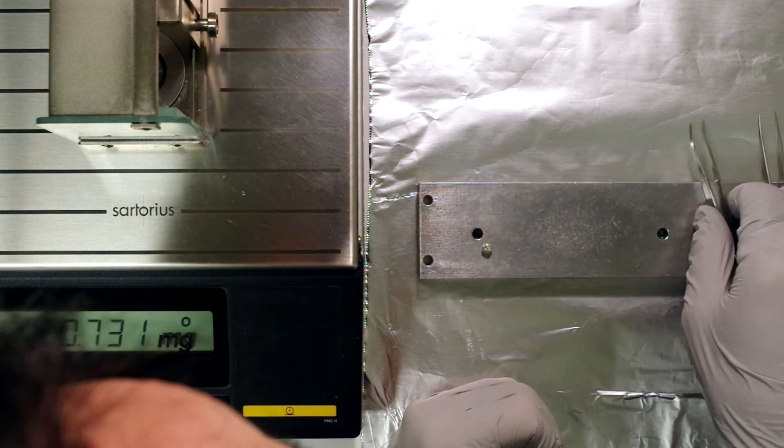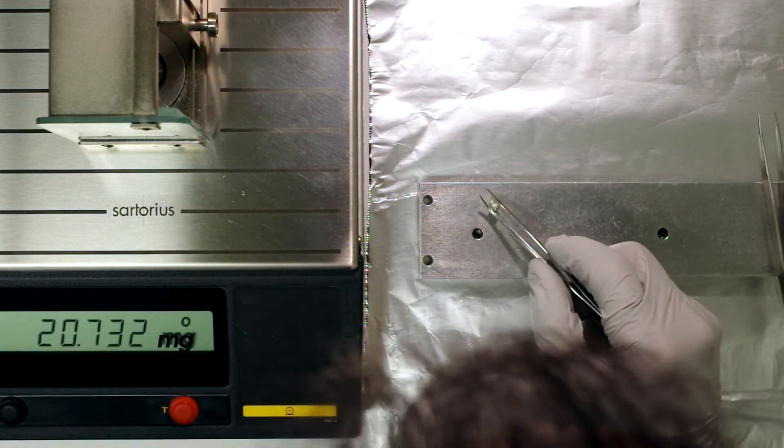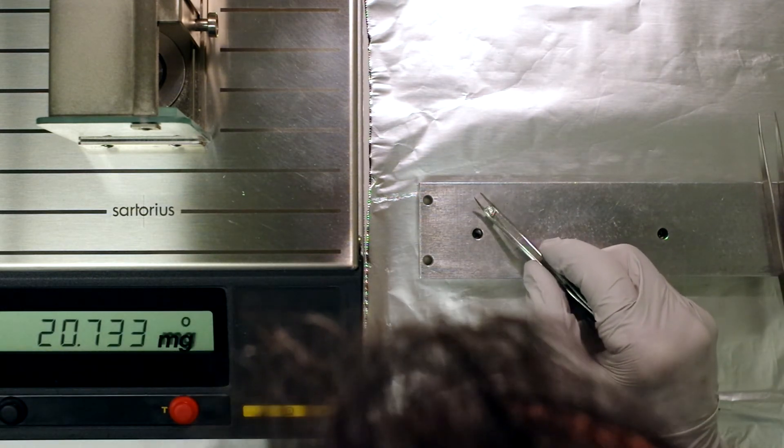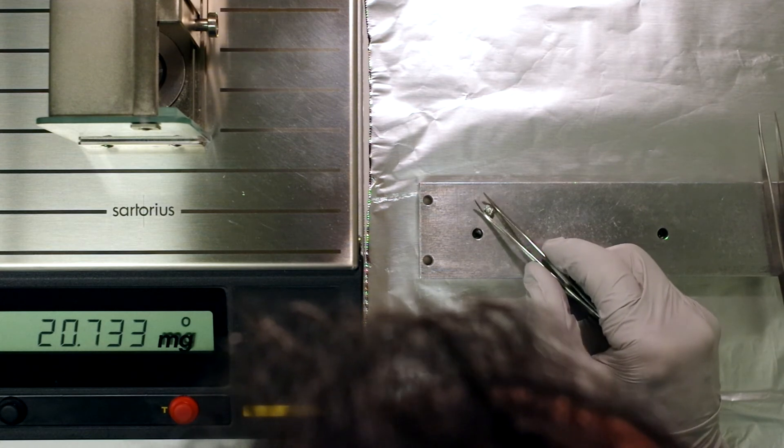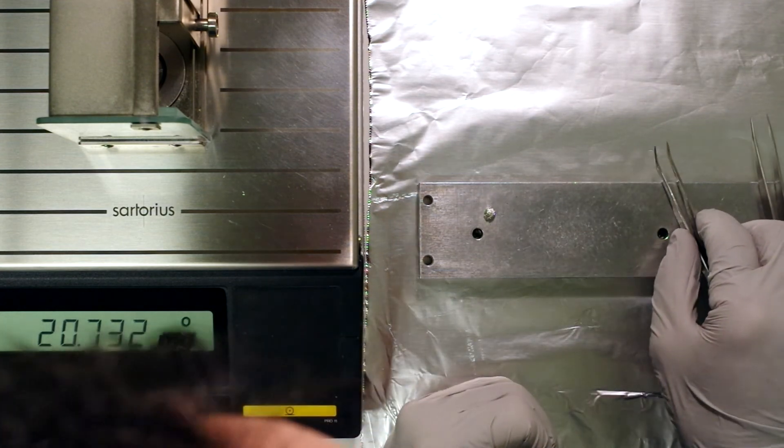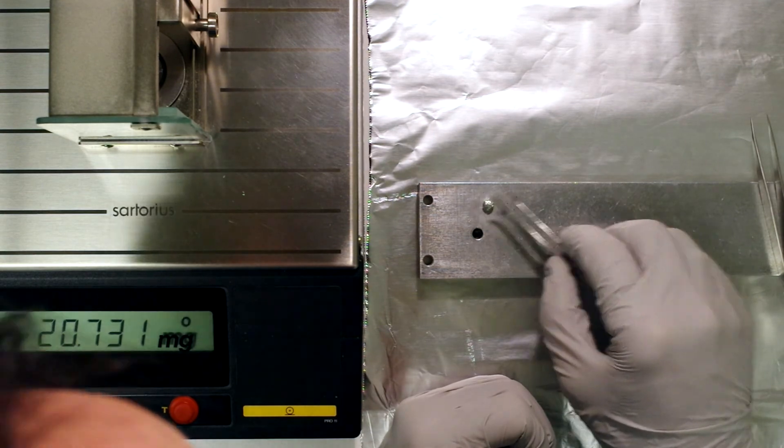And then what I usually do is I tap it against the tray to see if any material falls out. Quite often it does because it's hard to seal these.